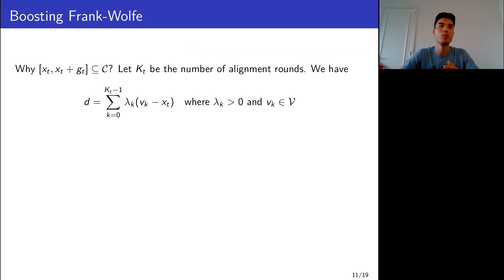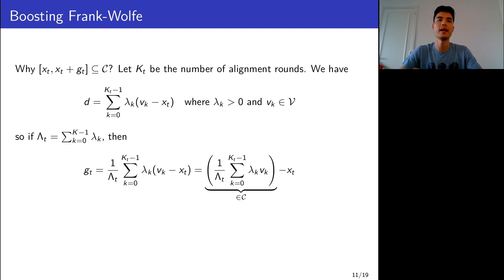More precisely, suppose I denote by k_t the number of alignment rounds. In the previous drawing that was k_t equal to two. We have the following decomposition. If I scale by the sum of the lambdas, then I can see that g_t + x_t belongs to C. By convexity, this shows that the whole line segment belongs to C. This is why we can follow a direction g_t that is better aligned with the negative gradient, and that allows to update x_t without needing projections.